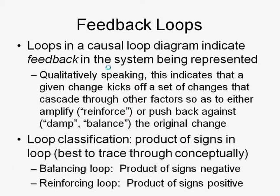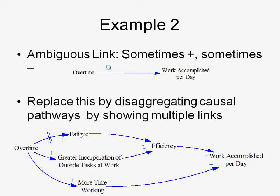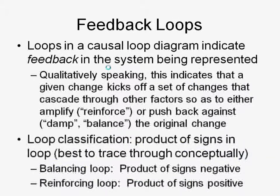Let's quickly go through feedback loops. We talked about variables and the links between variables — now we need to close the loop. When you start getting connections, you can get loops between things. Overtime and work accomplished per day — surely overtime affects work accomplished per day, but does work accomplished per day affect how much overtime you work? If we're not very productive per day, you might be more tempted to work overtime. There's a loop back — a feedback.